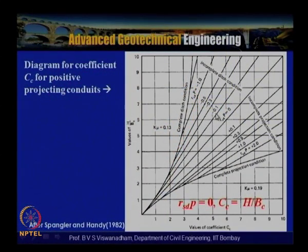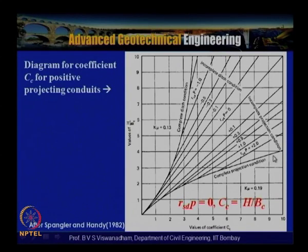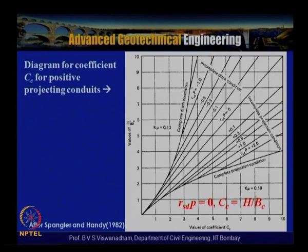Negative settlement ratios of −0.1, −0.2, −0.5, and −1 are shown on the diagram along with positive values. The complete projection, complete ditch, incomplete ditch, and incomplete projection conditions can all be read from this diagram.